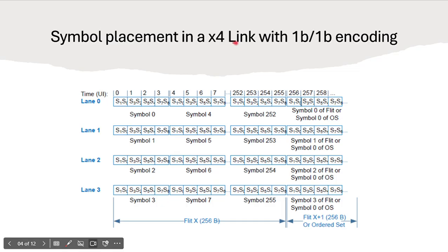Regarding symbol placement in a crossbar link with 1b/1b encoding: with four lanes, for every clock cycle, two bits of information are transmitted. At unit interval zero (start of clock cycle), two symbols — which are two bits — are transmitted within one clock cycle. The next clock cycle, two more bits are transmitted. A symbol has eight bits, i.e., one byte. The data is distributed across all the lanes using byte striping.